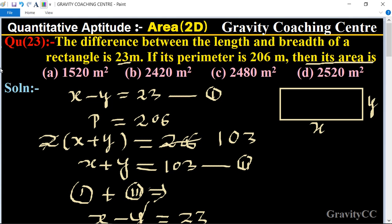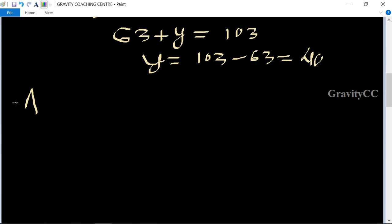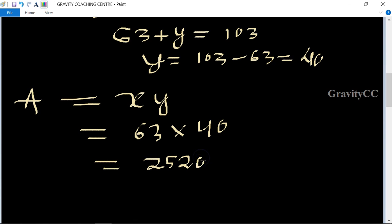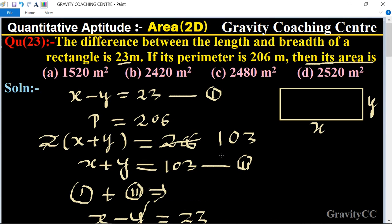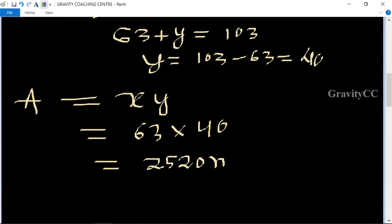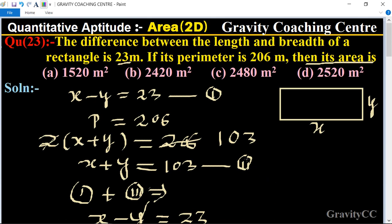What is the area? We know that the formula of area is length into breadth, x into y. So the value is 63 into 40 equal to 2520 meter square, which is the required answer. So option D is the correct answer.